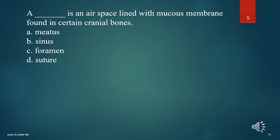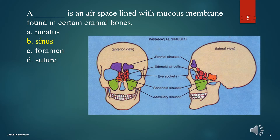What is an airspace lined with mucous membrane found in certain cranial bones? A. Meatus. B. Sinus. C. Foramen. D. Suture. The answer is B. Sinus.